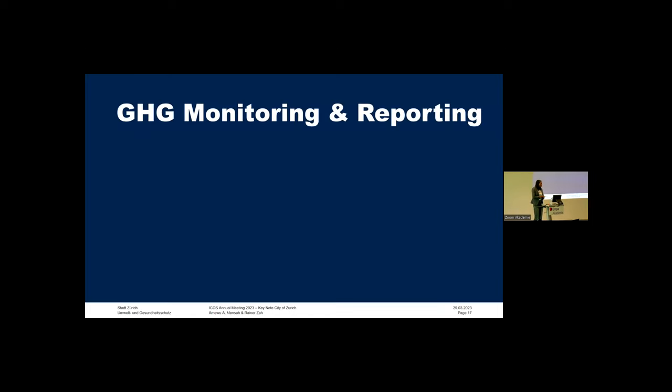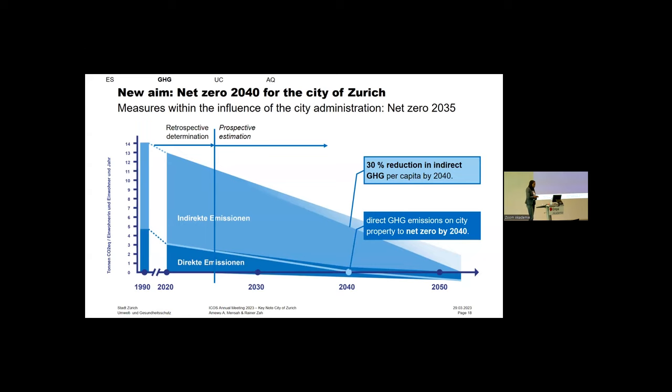We want to use the data to verify and also prove our efforts to be successful, or in case if we need to correct our efforts. Sometimes you come up with an idea, but if the measurements actually tell you you're wrong, you have to correct. Looking into the greenhouse gas monitoring and reporting, the aim is for net zero by 2040 for the city of Zurich, and it's even more ambitious for areas within the influence of the city administration. There's expected to be net zero by 2035.